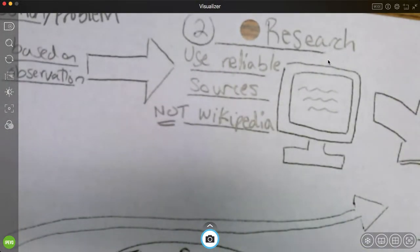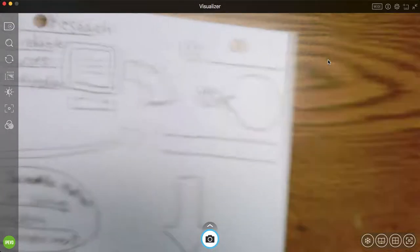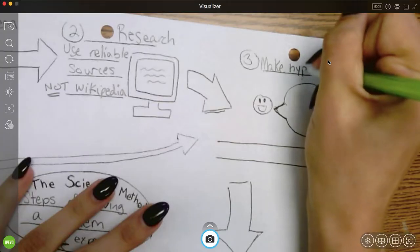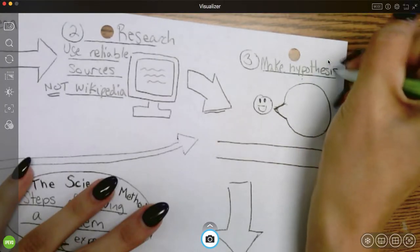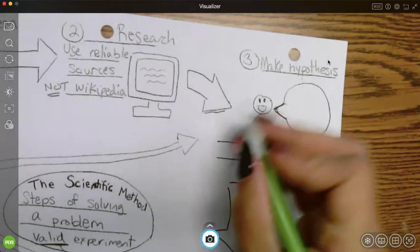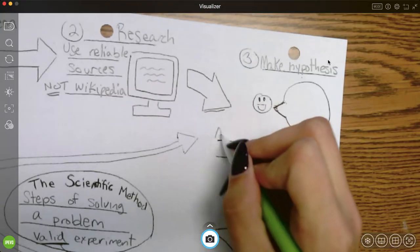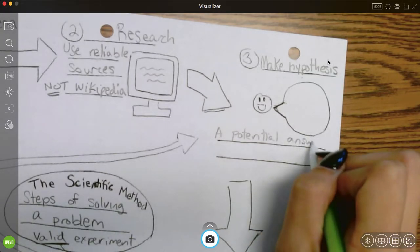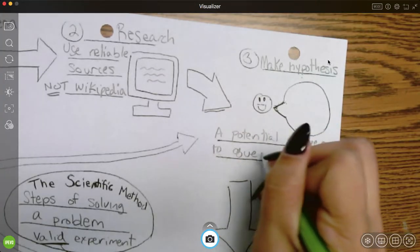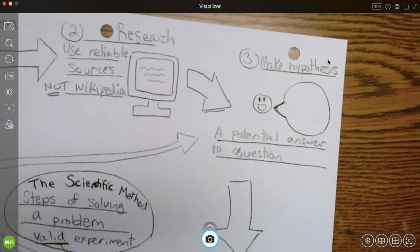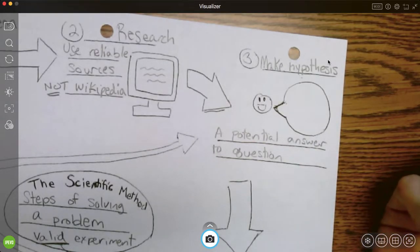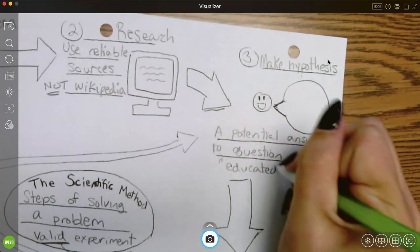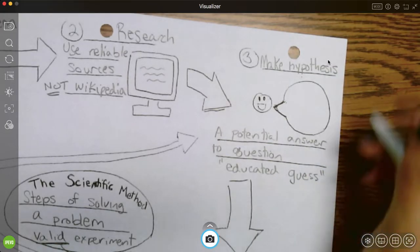Once we have our research, we're going to go to our next step, which is to make a hypothesis. So a hypothesis, what that is is a potential answer to the question that you asked. So it might be the right answer, but it might not be. It's your best guess. So sometimes a hypothesis is called an educated guess. It's educated because you did some research beforehand.